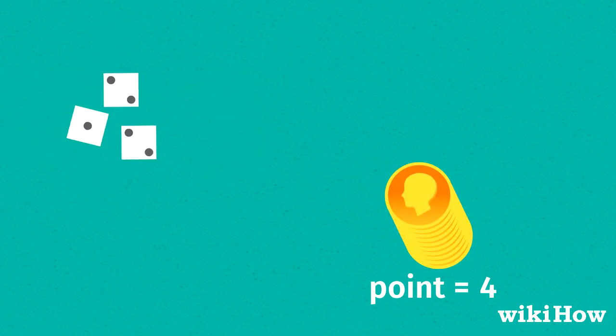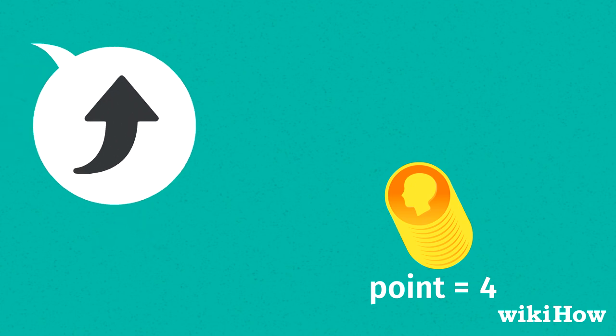If they roll a lower point, or an automatic lose, the banker wins the bet. Then, the next player to the left takes their turn.